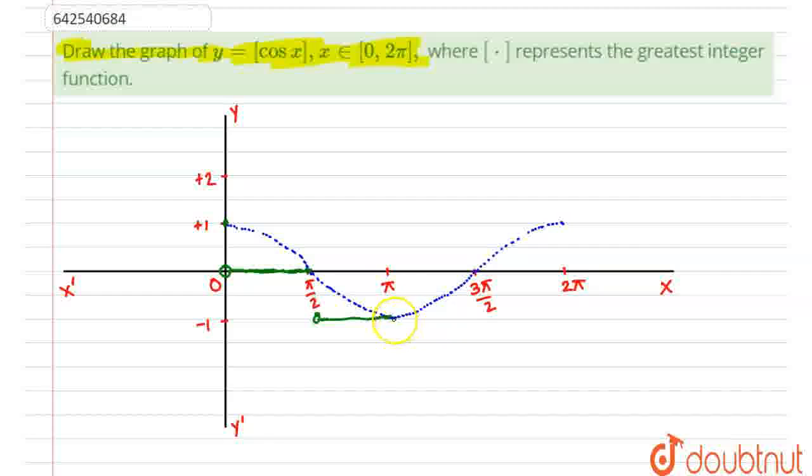Now, after that, it would again be simply going like this. For x equals 3π by 2 also, it would be here. Then, for x equals 3π by 2, box of cos 3π by 2 is box of 0. That is, it is 0.